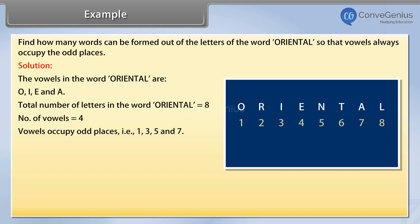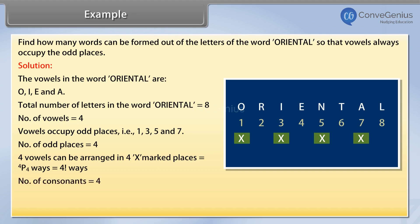Number of odd places is equal to 4. 4 vowels can be arranged in 4 X marked places equal to 4P4 ways = 4 factorial ways. Number of consonants is equal to 4. 4 consonants can be arranged in 4 places equal to 4P4 ways = 4 factorial ways.